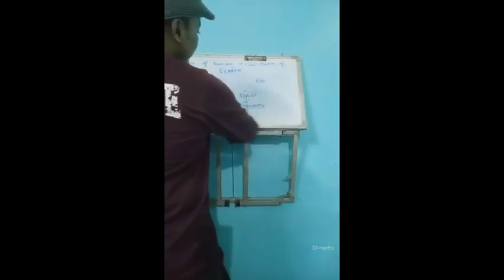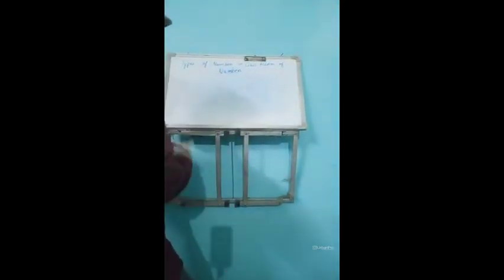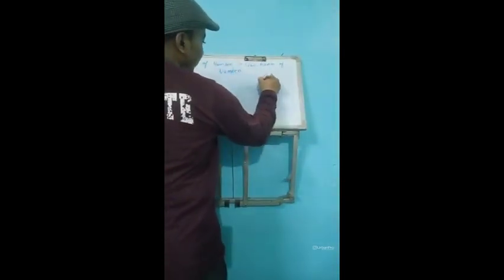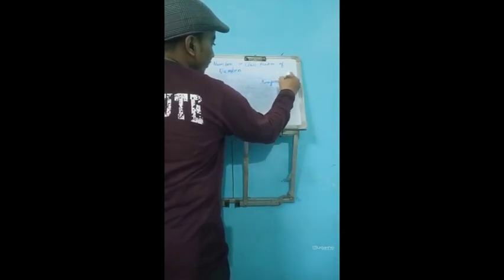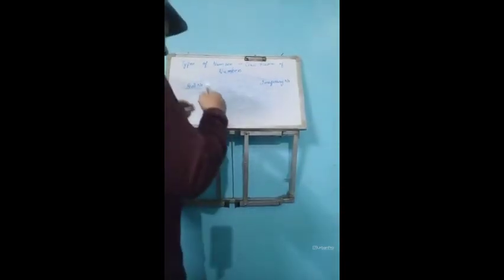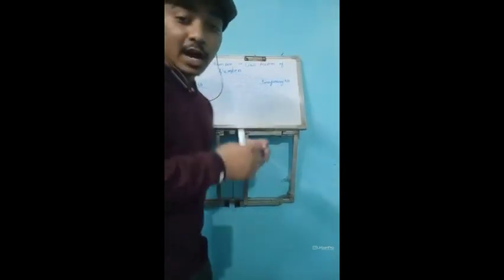Now come to the third topic, that is classification of number or types of numbers. Numbers are broadly classified into two types: imaginary number and real number. A real number is any number which we can think of or which exists in the real world.